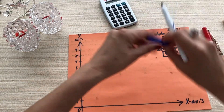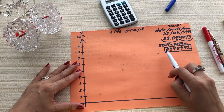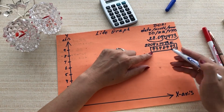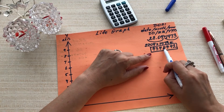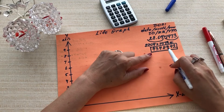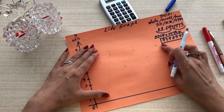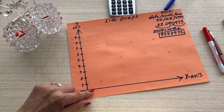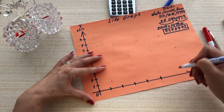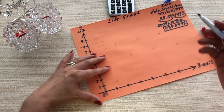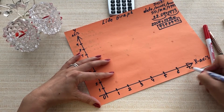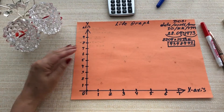The next step is to count how many digits you've got in your main number. Let's count: 1, 2, 3, 4, 5, 6, 7. In this particular case we've got 7 digits — 7 numbers. So what does it mean? 7 dividers on the x-axis: 1, 2, 3, 4, 5, 6, 7 — because we have 7 digits.